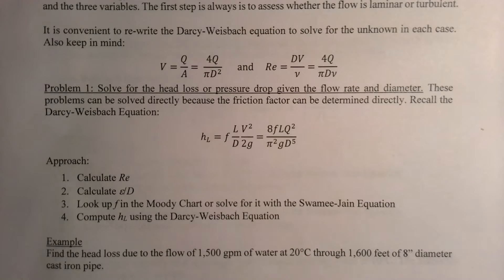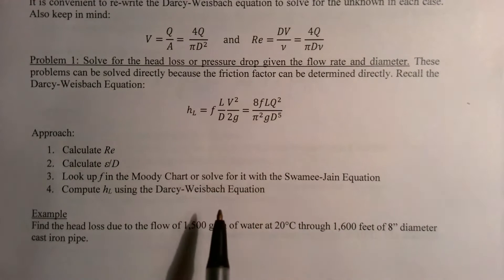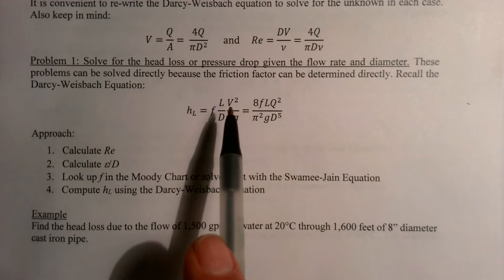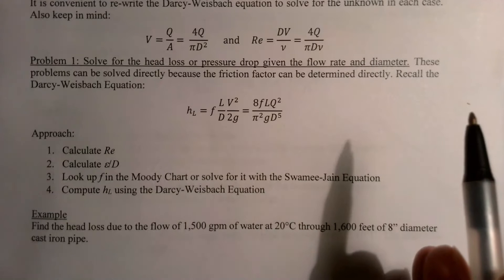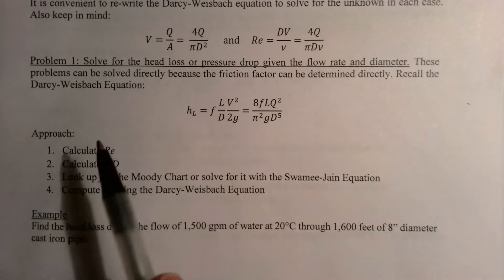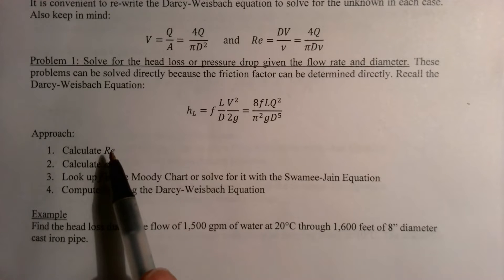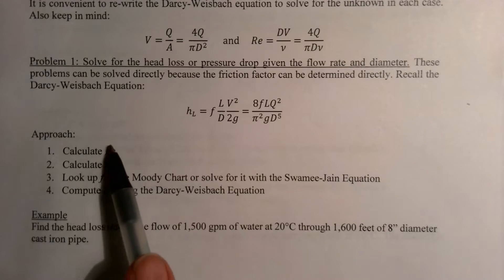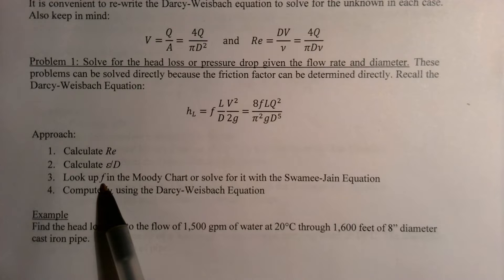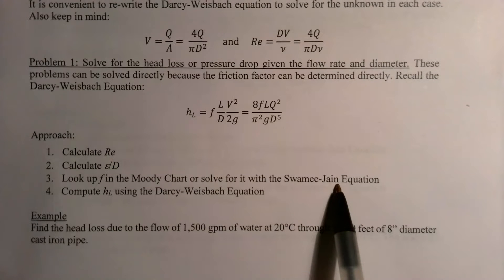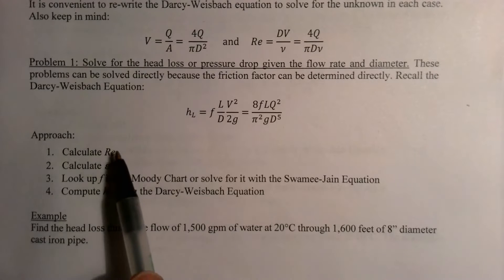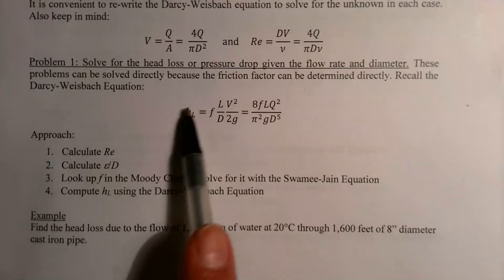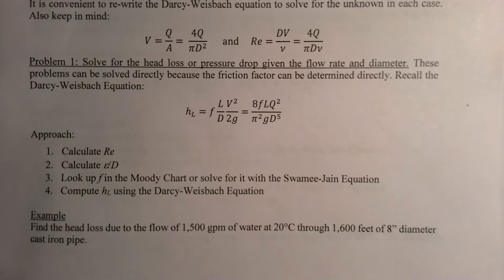When solving for head loss, we use this form of the Darcy-Weisbach equation. We may also need to get pressure drop and include an energy balance equation. We know the flow rate and diameter, so we can get the velocity, Reynolds number, and relative roughness — our two dimensionless numbers — then use those to get the friction factor f from the Moody chart or the Swamy-Jane equation. Then we plug in and get the head loss. Let's do a quick example.